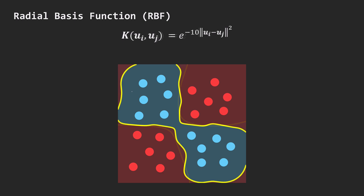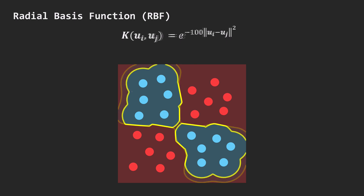When we keep increasing the gamma value, the decision boundary fits the training data excessively well, and we see overfitting, where the model captures too much detail from the training data, limiting its ability to generalize. This topic, along with underfitting, deserves a separate video.